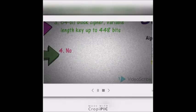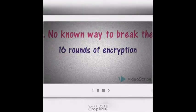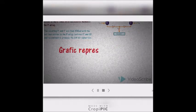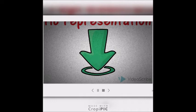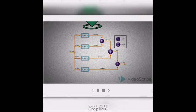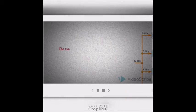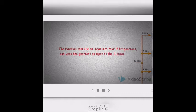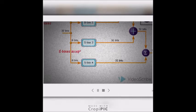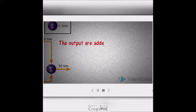Blowfish has no known way to break the full 16 rounds of encryption. Looking at the graphic representation of F: the function splits a 32-bit input into four 8-bit quarters and uses the quarters as inputs to the S-boxes. The S-boxes accept 8-bit input and produce 32-bit output. The outputs are added modulo 2^32 and XORed to produce the final 32-bit output.